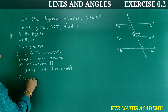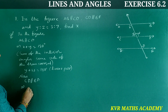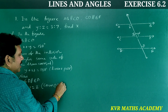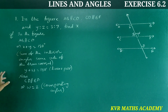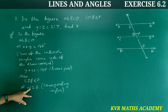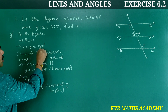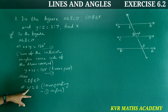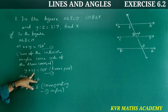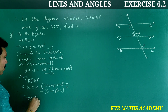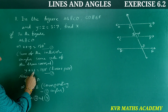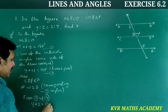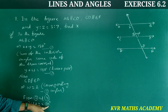Since CD is parallel to EF, W is equal to Z as corresponding angles. So from equations 2 and 3, substituting W with Z in Y plus W equals 180, we get Y plus Z is equal to 180 degrees.